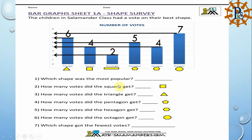The first question: which shape was the most popular? Here we are asked for the name of the shape, not a number. The most popular shape is the one with the highest bar. The answer is octagon. The next questions ask about the number of votes each shape received.